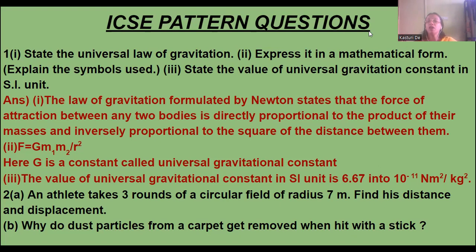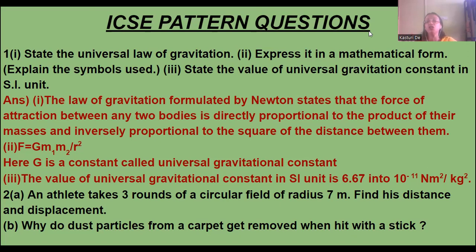That means it is directly proportional to the product of their masses, and inversely proportional to the square of the distance between them. To remove the proportional sign, we need to add one constant. That constant is G, which is known as the universal gravitational constant. The mathematical form is written as F is equal to G into M1 into M2 divided by R square. That G is called the universal gravitational constant.